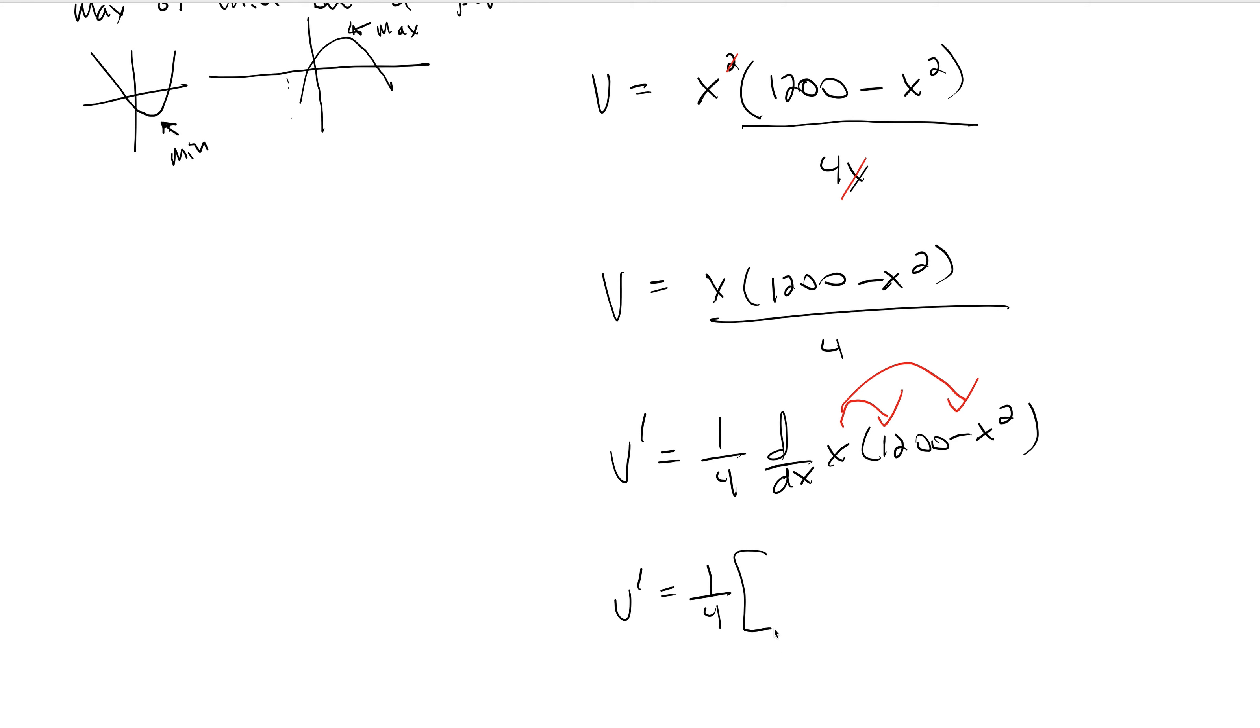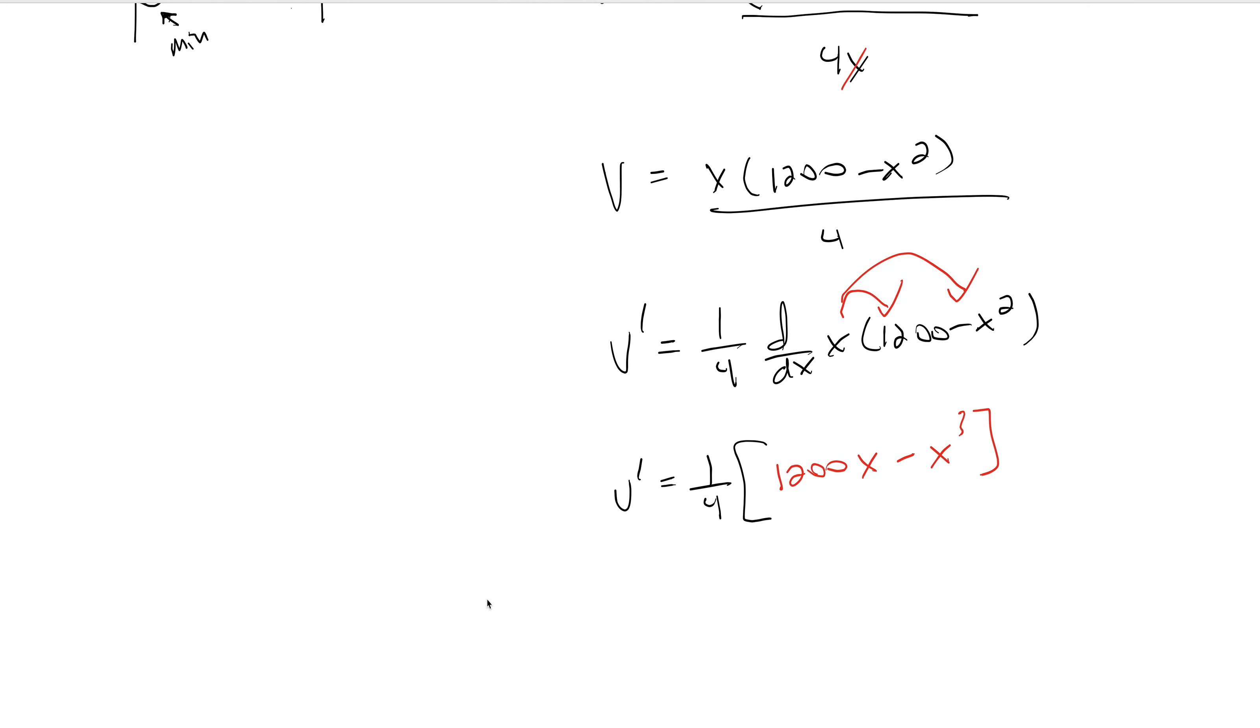Oh, snap. Bam. All right. So we're going to do 1,200X minus, avoid product rule and quotient rule if you can distribute at all costs. All right. Cool. So now, wait, I forgot my, lost my derivative. So now we're just taking the derivative of that, which involves no rule. So V prime is 1 fourth times, what is it, 1,200? Just 1,200, right? Yeah, minus 3X squared. Right? Great. Now we set it equal to zero.